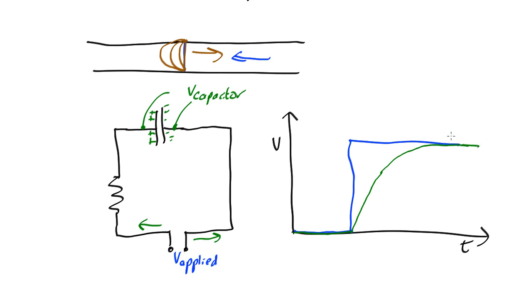So this is one use of capacitors. It's to smooth out things like sudden spikes in voltage. Instead of getting a very sharp change in voltage, the capacitor in the circuit gives you a very gentle change in voltage.